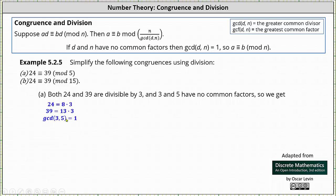Well, 3 and 5 are relatively prime, meaning the only common factor is one, and therefore the greatest common divisor of 3 and 5 is one. This indicates to simplify the given congruence, we divide 24 by 3, we divide 39 by 3, and we divide 5 by 1, which of course is not going to change 5. The simplified congruence is 8 is congruent to 13 mod 5.